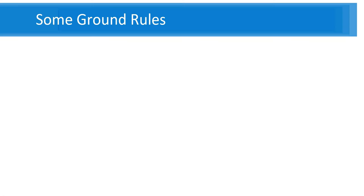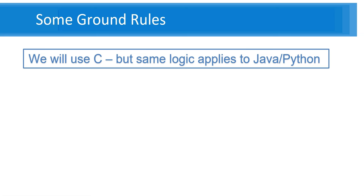Some ground rules: we will use C programming as the base language because many beginners start with it. But if you're starting with Python or Java, it doesn't matter — the logic is the same. Only the syntax might be slightly different. The same for loop, while, and if are very similar across languages. Only a semicolon might be missing or a tab here or there. How you approach the thinking and program remains the same irrespective of the language.